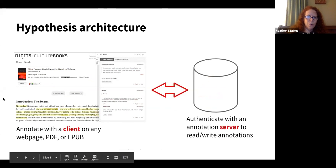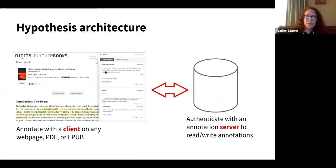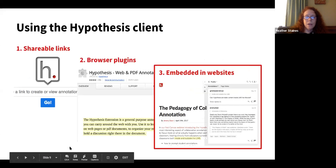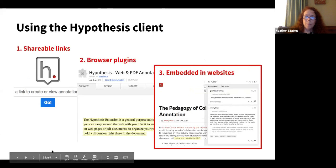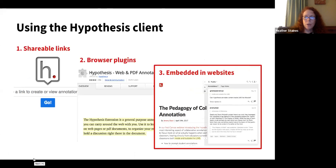There are a couple of pieces to the Hypothesis architecture. One is the client — the sidebar that pops out from the right-hand side of the screen where you make and interact with annotations. Those annotations are authenticated to the server where they're stored. When you land on a document, a call goes out to the server asking whether there are any annotations this user should be able to see, including annotations they've made themselves, public annotations, and any made in a group they're part of. Hypothesis was built so organizations can run their own annotation server, and recently MDPI did launch their own.